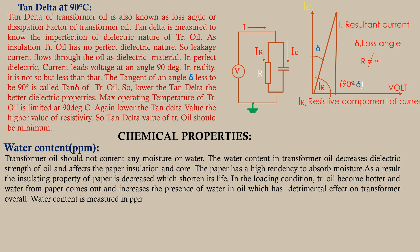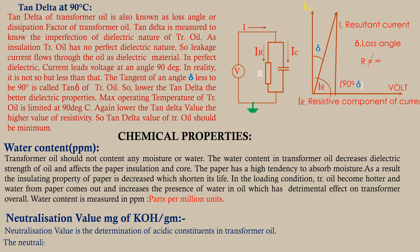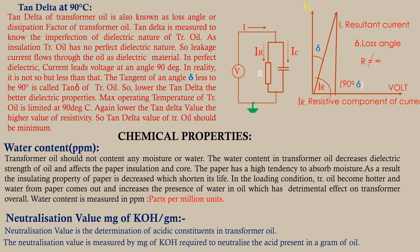Water content is measured in PPM (parts per million). Neutralization value is the determination of acidic constituents in transformer oil. It is measured by the milligrams of KOH required to neutralize the acid present in one gram of oil.